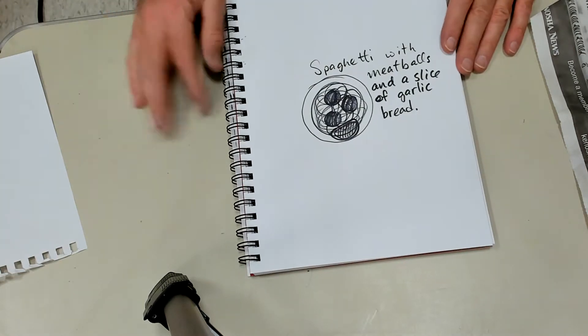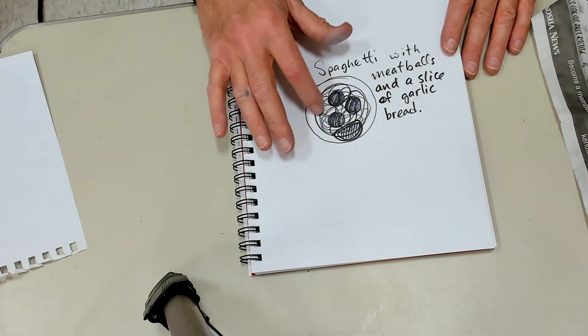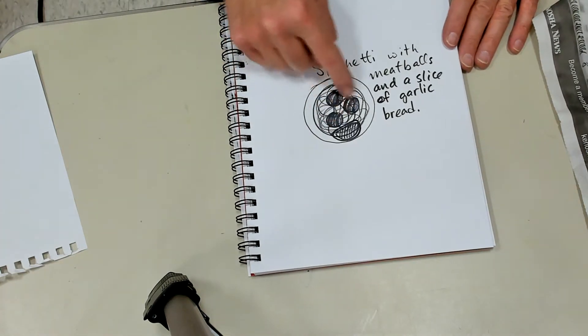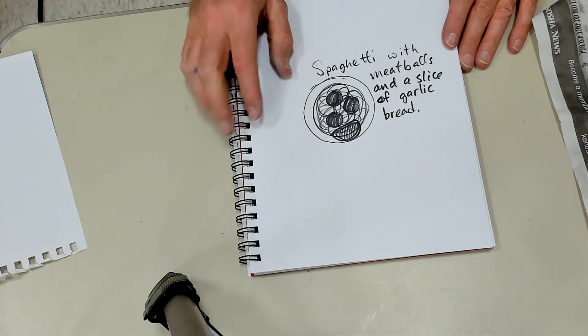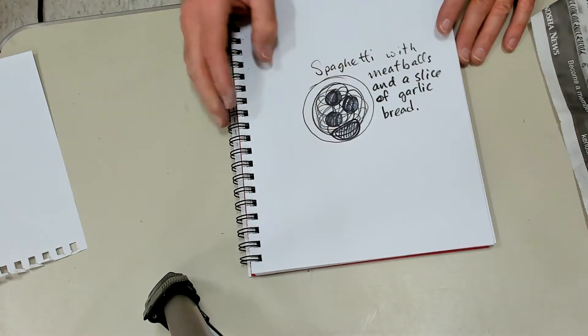So I need several things. I need a plate, some coils, some little clay balls, and then I need to roll out a little slab and make a piece of garlic bread.